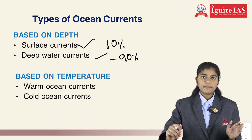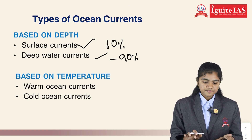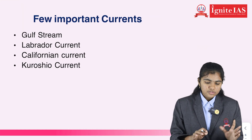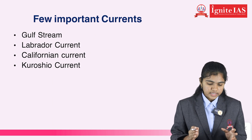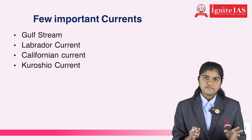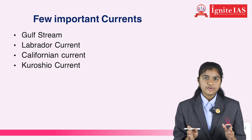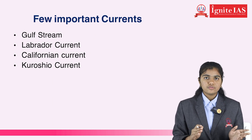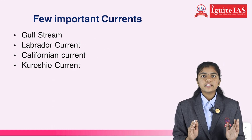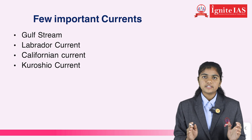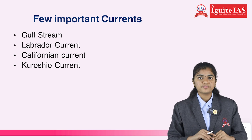An example of a cold ocean current is the Labrador current. Some important currents are the Gulf Stream, Labrador current, Kuroshio current, and Californian current. Thank you.